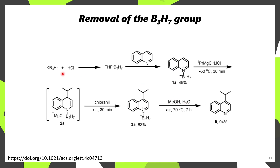If you're wondering about how they remove that B3H7 group, all they have to do is mix this with methanol and water in air at 70 degrees for seven hours, which leads to complete removal of the B3H7 group.